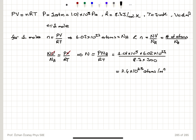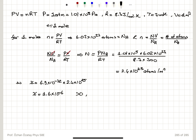Plugging N = 2.4×10²⁵ atoms/m³ into our susceptibility expression: chi = 6.9×10⁻³² × 2.4×10²⁵, we obtain a paramagnetic susceptibility of 1.6×10⁻⁶, which is positive and very small.